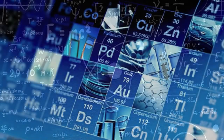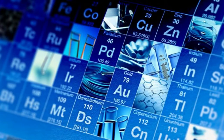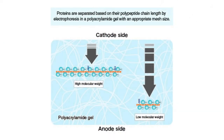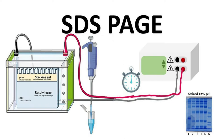In electrophoresis, you create an electric field around the gel matrix and samples. You have a cathode (negative pole) at the top and an anode (positive pole) at the bottom. Since all proteins are coated with a negative charge, once you turn on the electrical field, they migrate down toward the anode. But because they all have the same charge, they separate out based on size — smaller proteins run out first, and larger proteins lag behind. That's SDS-PAGE.